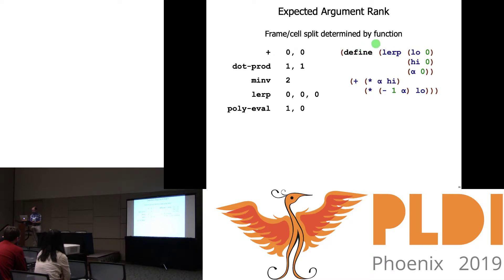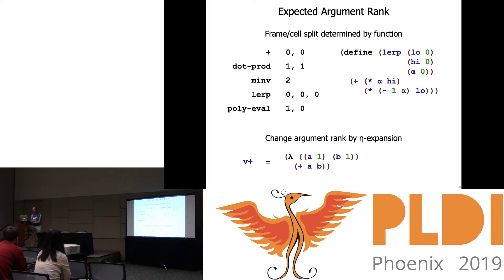Since the expected argument rank is important, we have to include it in the definition of a function. When we write out the definition of linear interpolation, we say here are these three argument names and their respective ranks. We can also change the argument rank a function expects by eta-expanding it — vector plus can be written as a function on a rank-one argument a and a rank-one argument b that applies scalar addition to those two arguments. In the Remora prototype we use a tilde syntax with a paren list of the argument ranks followed by the function body.